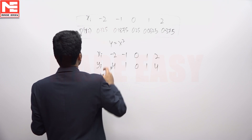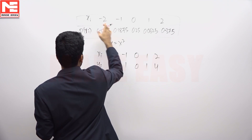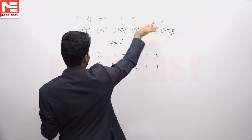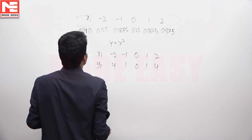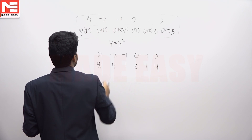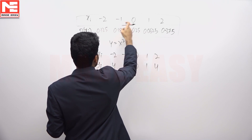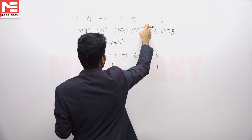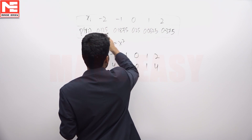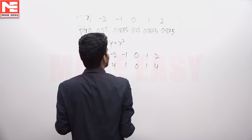A discrete random variable x is distributed such that x takes the values of minus 2, minus 1, 0, 1, and 2, and these are the respective probabilities.